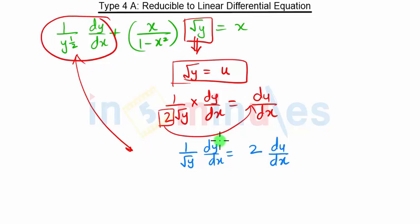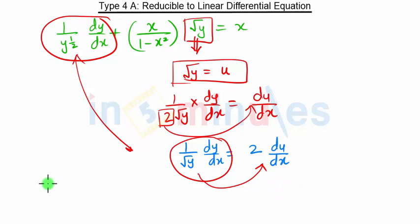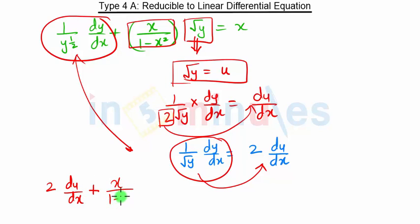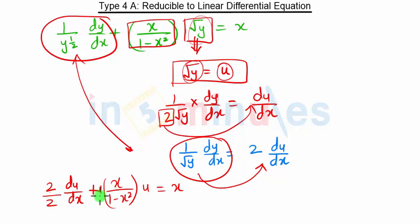We replace that part by 2·du/dx. The rest stays: 2·(du/dx) + x/(1 − x²)·u = x. Now dividing the entire equation by 2 gives us: du/dx + x/(2(1 − x²))·u = x/2.